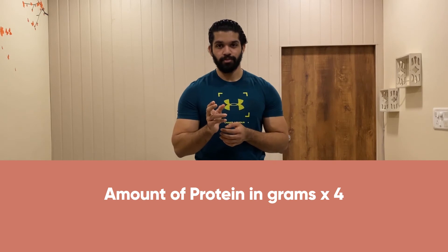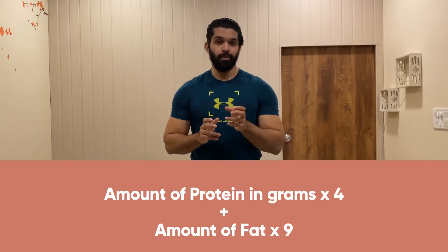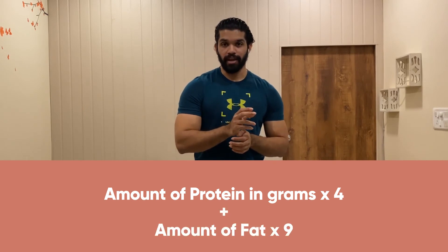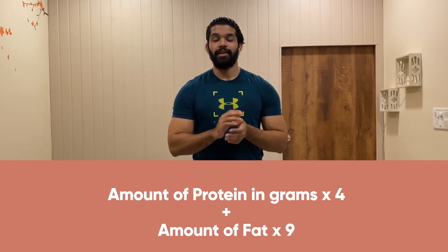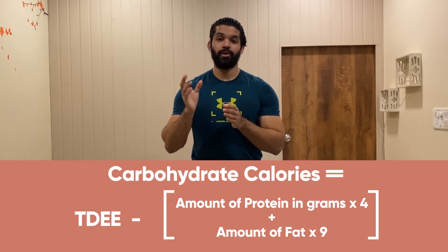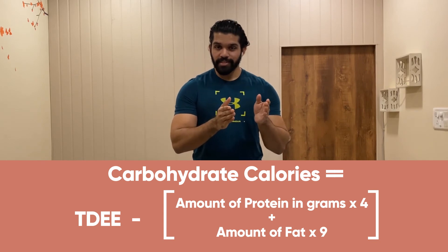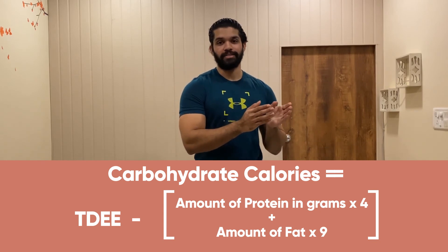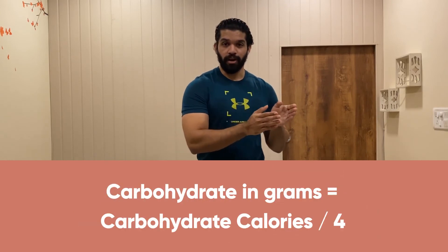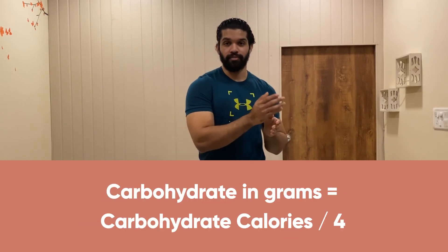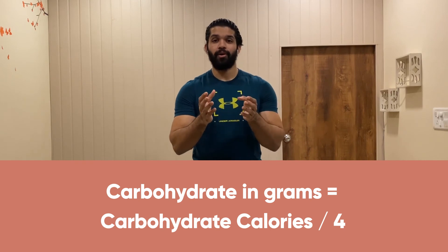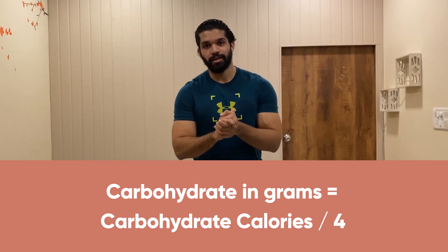Take your pen and paper: the amount of protein in grams multiplied by 4, plus the amount of fat multiplied by 9 — deduct this total from your total calories. The remaining calories are your carbohydrates. Now divide the carbohydrate calories by 4 — that would be your carbohydrates in grams. I know that sounds difficult, but I've written everything down in the caption so don't worry about it.